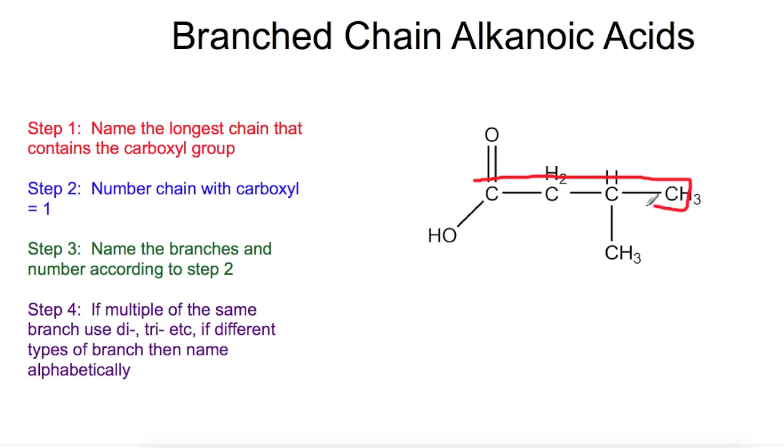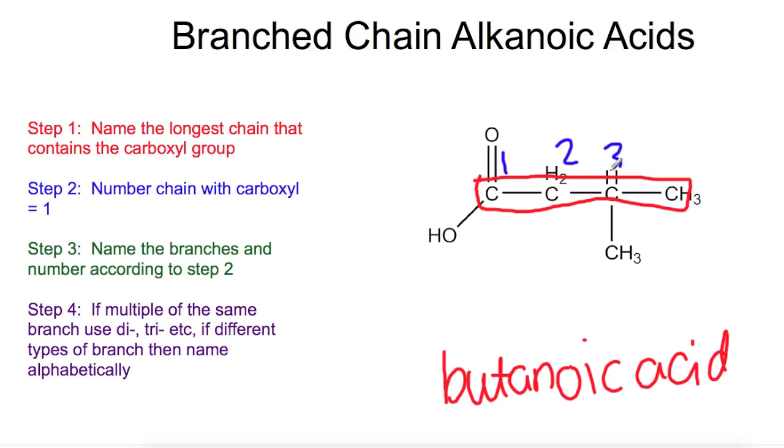So for us it's this one here where we have four carbons so that's going to be named after butane. So we're going to have butanoic acid. No need to put in the number for where the acid is, it's always on number one, but we do need to number the chain so that we can put in where our branches are. So we have one, two, three, four here.